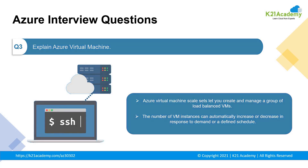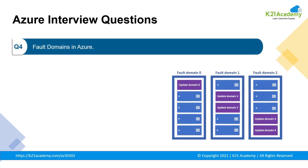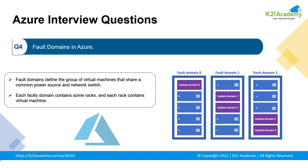Moving to the fourth question: what are fault domains? A fault domain defines the group of virtual machines that share a power source and network switch. Each fault domain contains some racks and each rack contains a virtual machine. Each fault domain shares a power supply and a network switch. You should place your VMs such that each fault domain gets one web server and one database server.